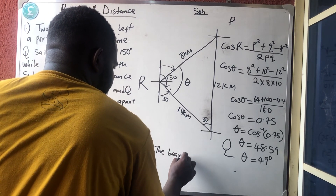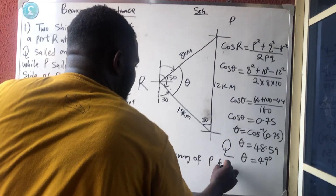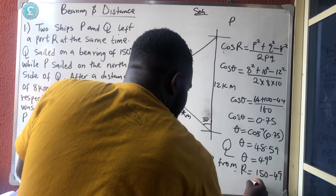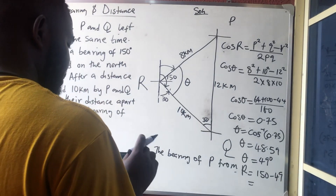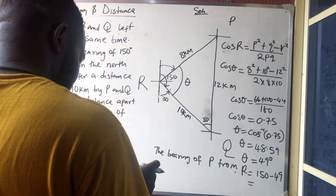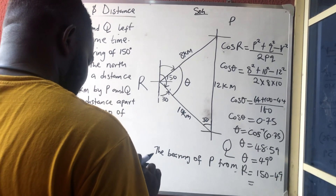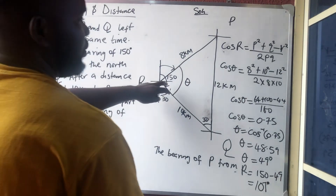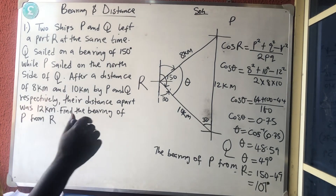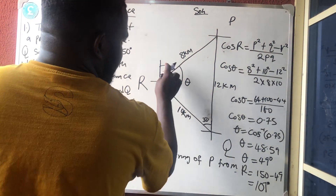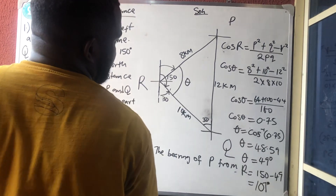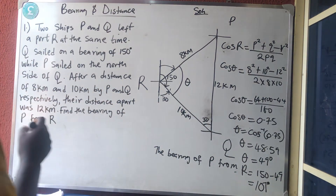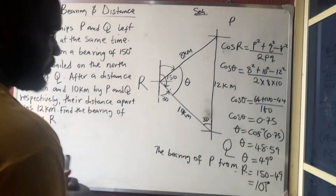The bearing of P from R is therefore 150 minus 49, which gives 101°. Looking at the diagram again, it appears our earlier sketch was not quite right — P is actually in the second quadrant as well, not the first. So P goes this way and joins somewhere here. The bearing of P from R is 101°. Thank you very much for watching.